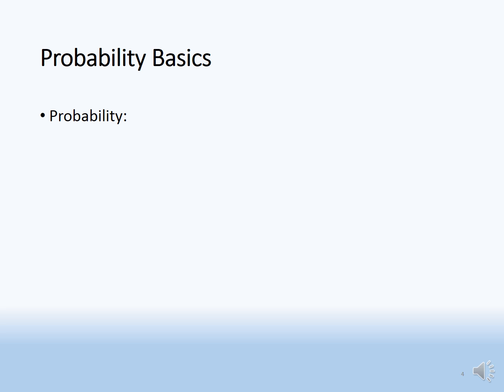Basics of probability: probability is simply the number of favorable cases upon the number of existing cases, denoted by P(x). Conditional probability: the probability of event x1 happening when x2 has already happened is P(x1 given x2), or equivalently P(x2 given x1).